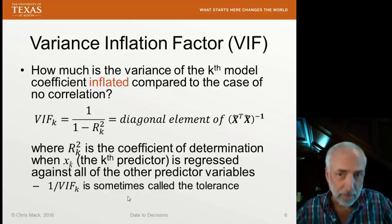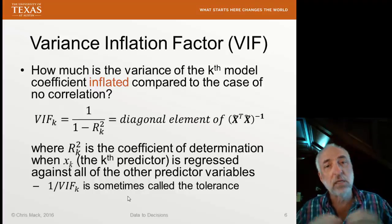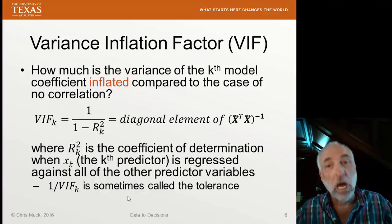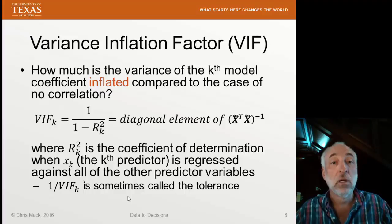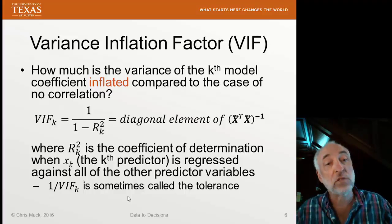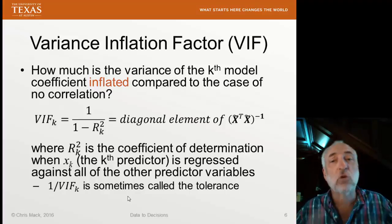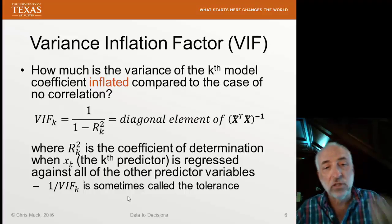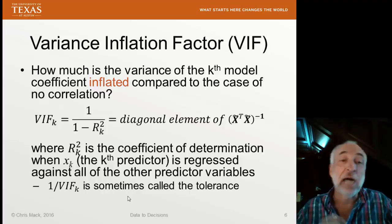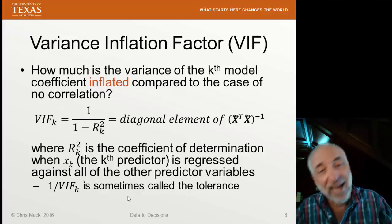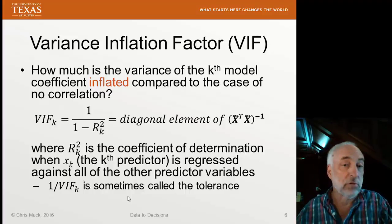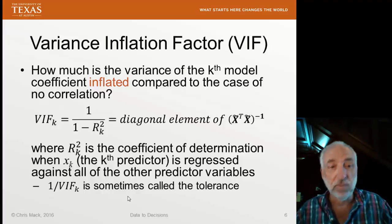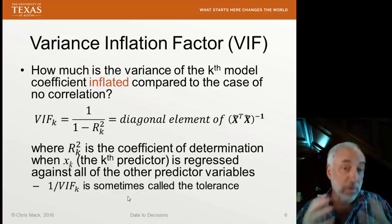What is the variance inflation factor? It is a measure of how much the k-th model coefficient is inflated beyond what it would be, because the k-th variable is correlated with all the other variables in the model. What we do is we regress the k-th variable, X sub k, against all the other predictive variables. We think of the k-th predictive variable as a response and use all the other predictive variables as the inputs — the regressors — and we do a linear regression. Then we ask: what is R-squared for that model?